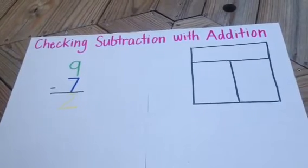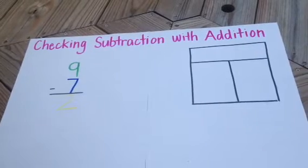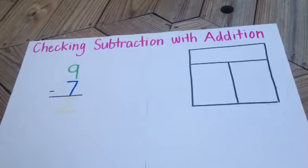Our 9 is in green. One part is 7, and that is blue. And then our answer is in yellow because yellow and blue make green.